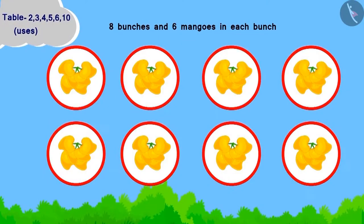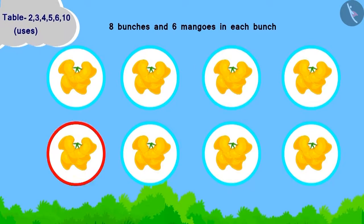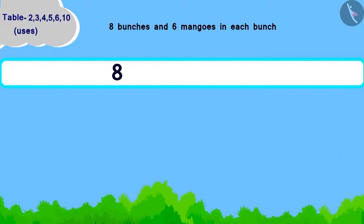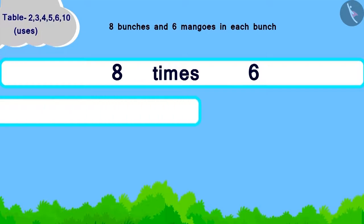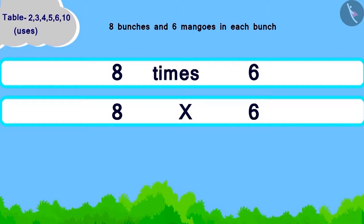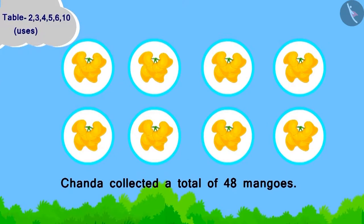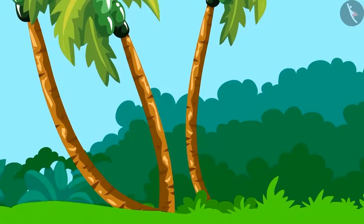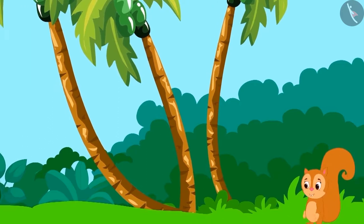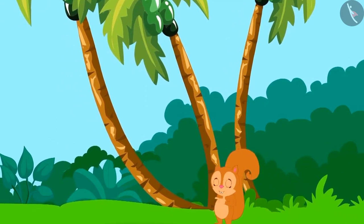Chanda has got eight bunches and every bunch has six mangoes in it. How will we write this? Eight times six. Now, how will we write it as multiplication? Eight multiplied by six. Using the table of six, that becomes 48. Chanda collected a total of 48 mangoes.